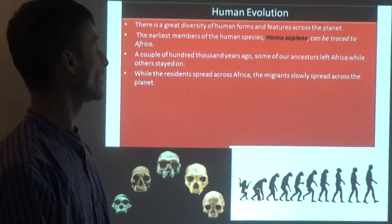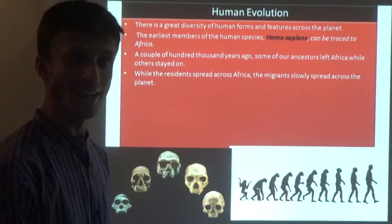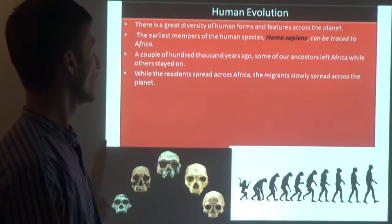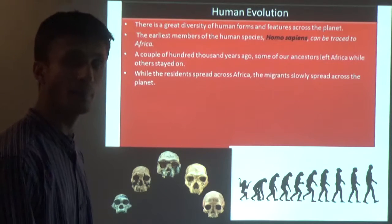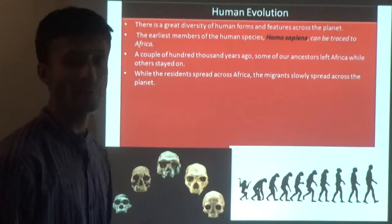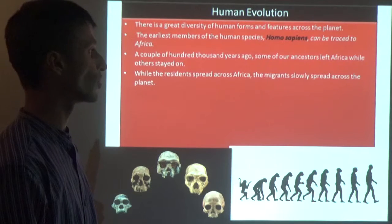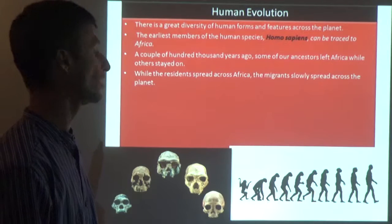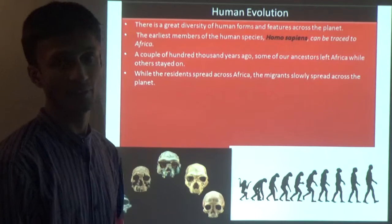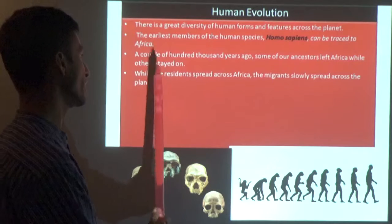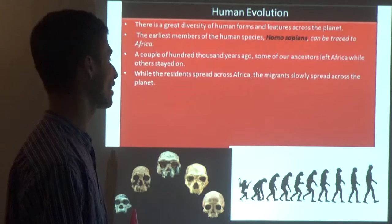Human evolution: there is great diversity of human forms and features across the planet. The earliest members of the human species - Homo sapiens - can be traced to Africa. A couple of hundred thousand years ago, some of our ancestors left Africa while others stayed on. Life for human beings originated in Africa; some migrated to different continents and stayed there, while the migrants slowly spread across the planet.